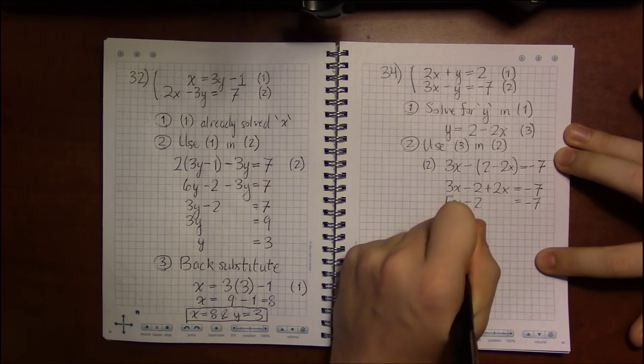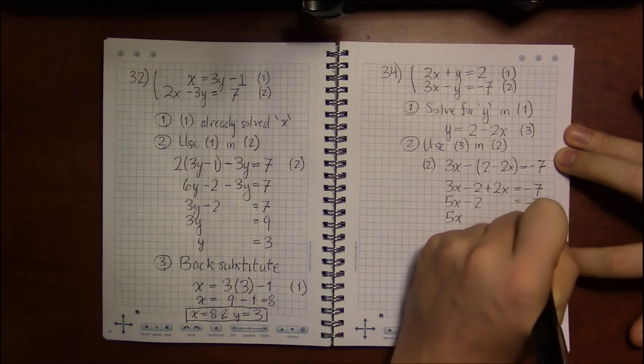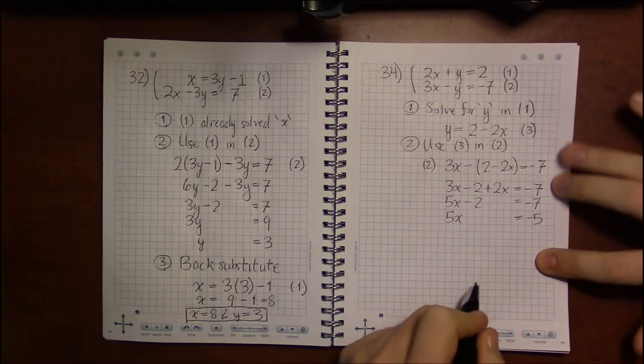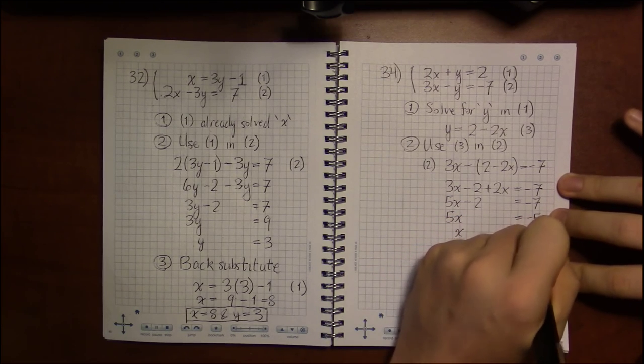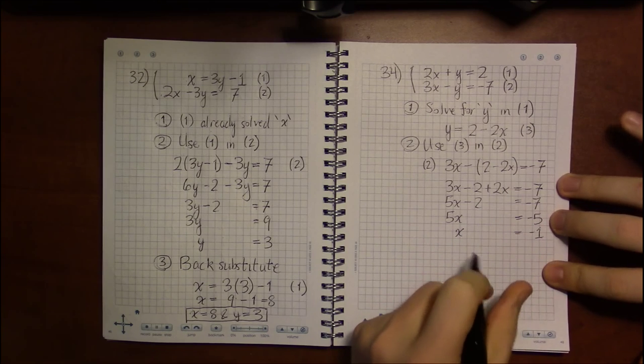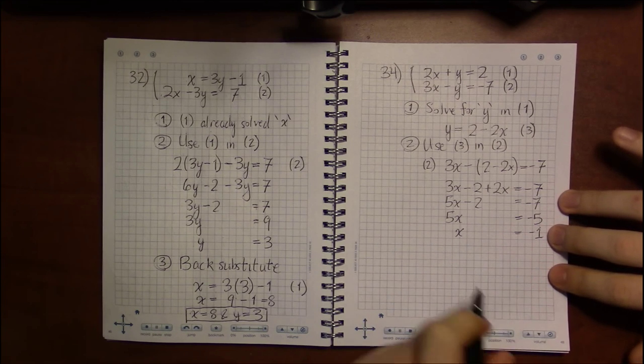So we will have to add 2 to both sides, leaving us with 5x is minus 5. And finally, we get half of our answer, namely that x is minus 1.